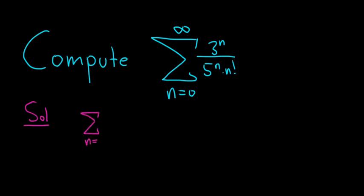So this is the infinite sum from 0 to infinity of, I think we can write it like this, 3 fifths to the n over n factorial, right? It should be the same thing.